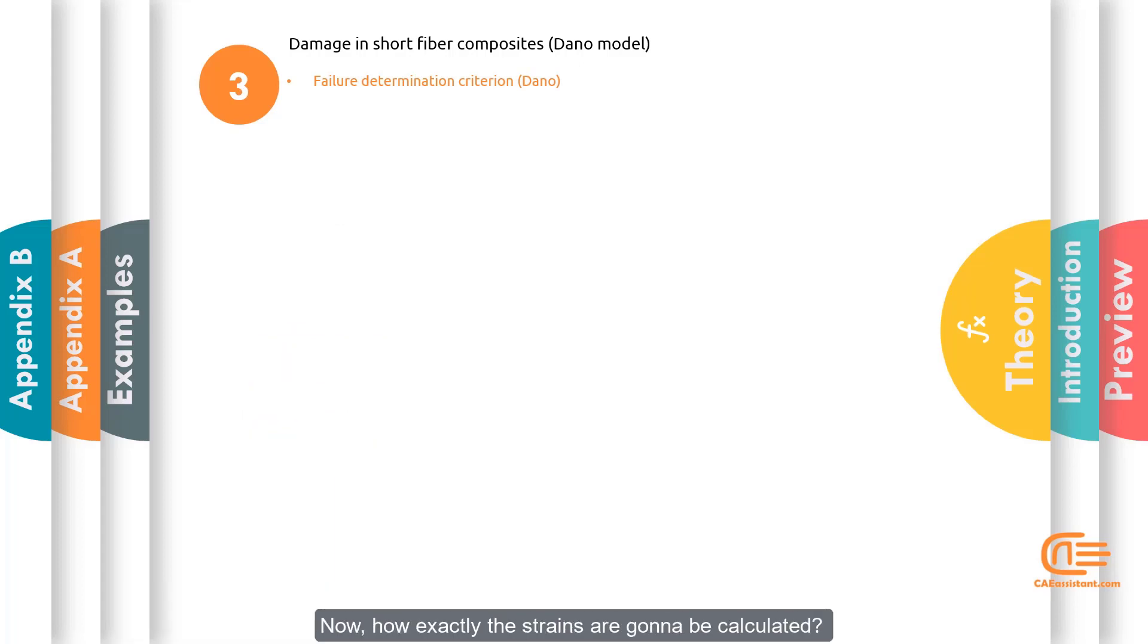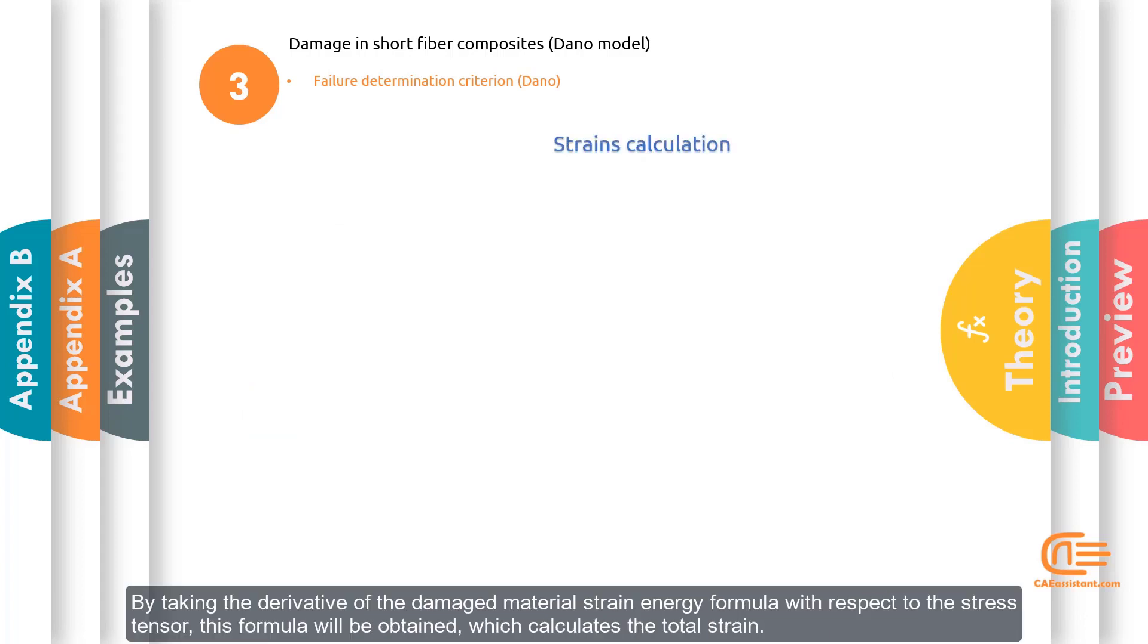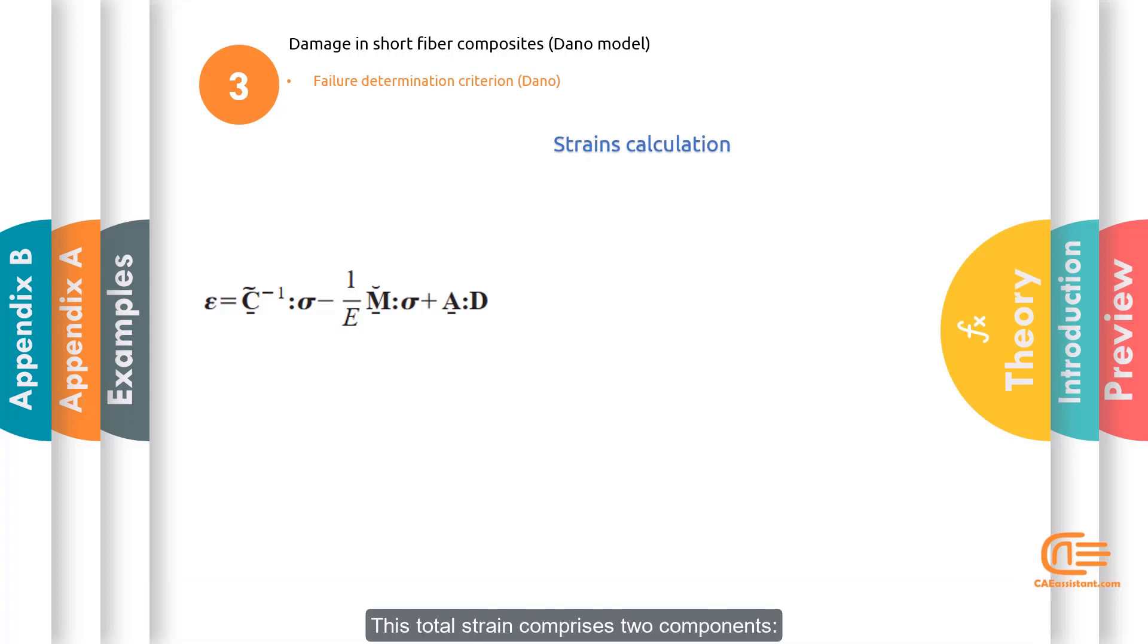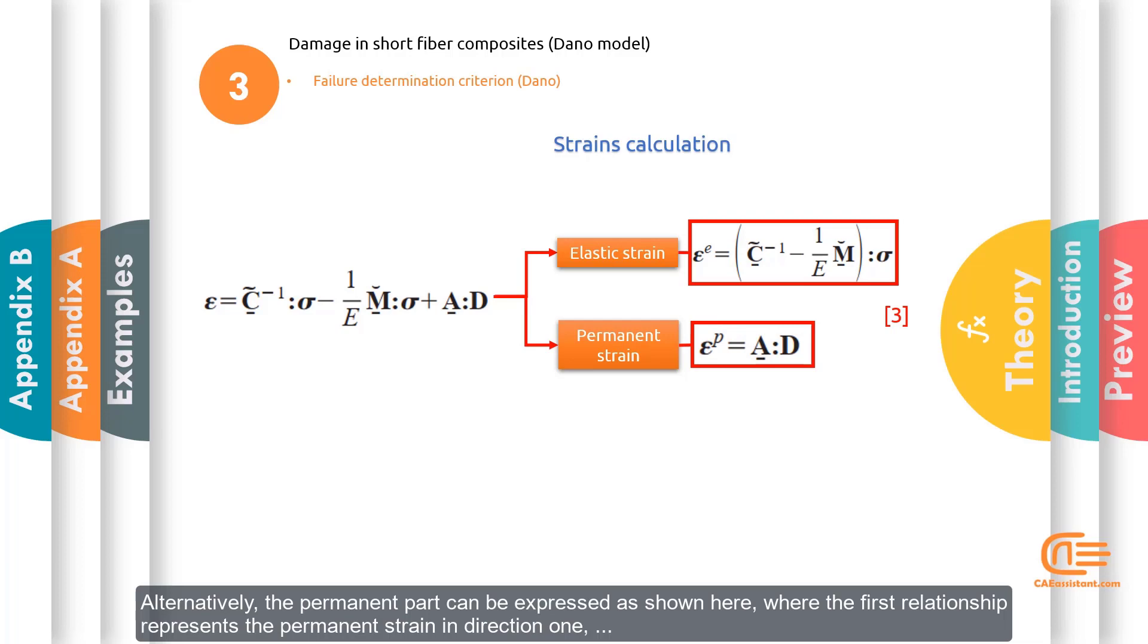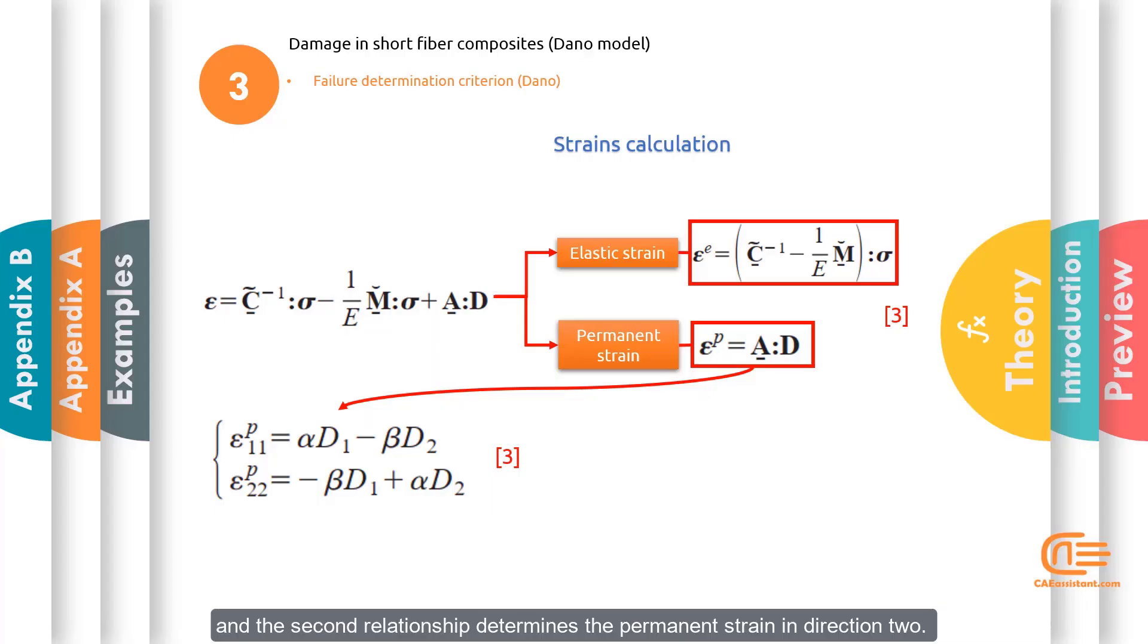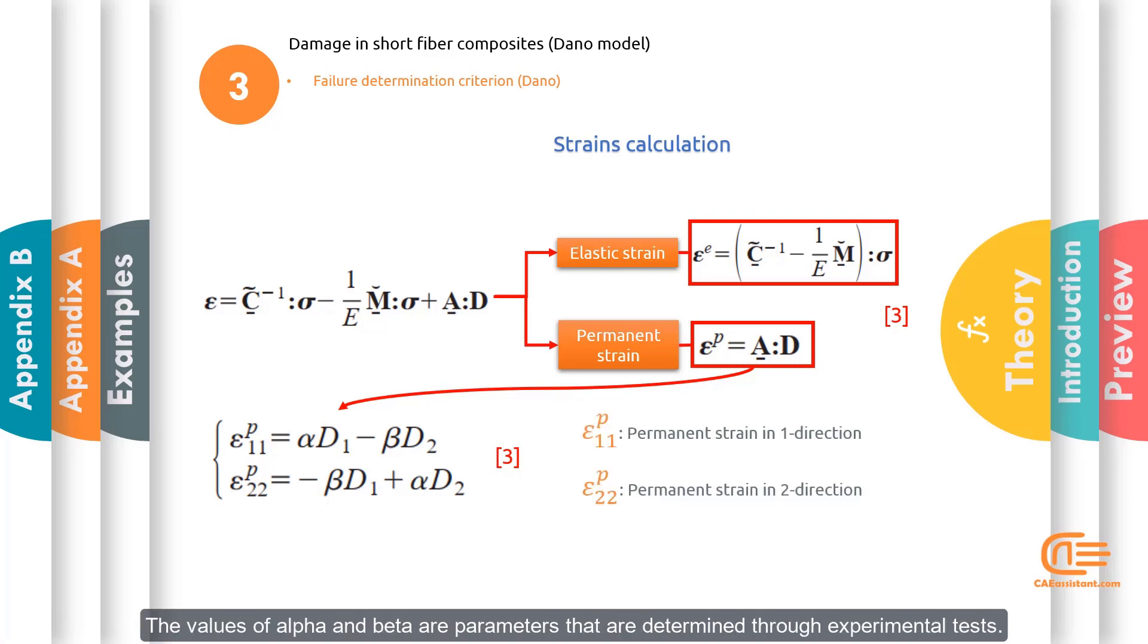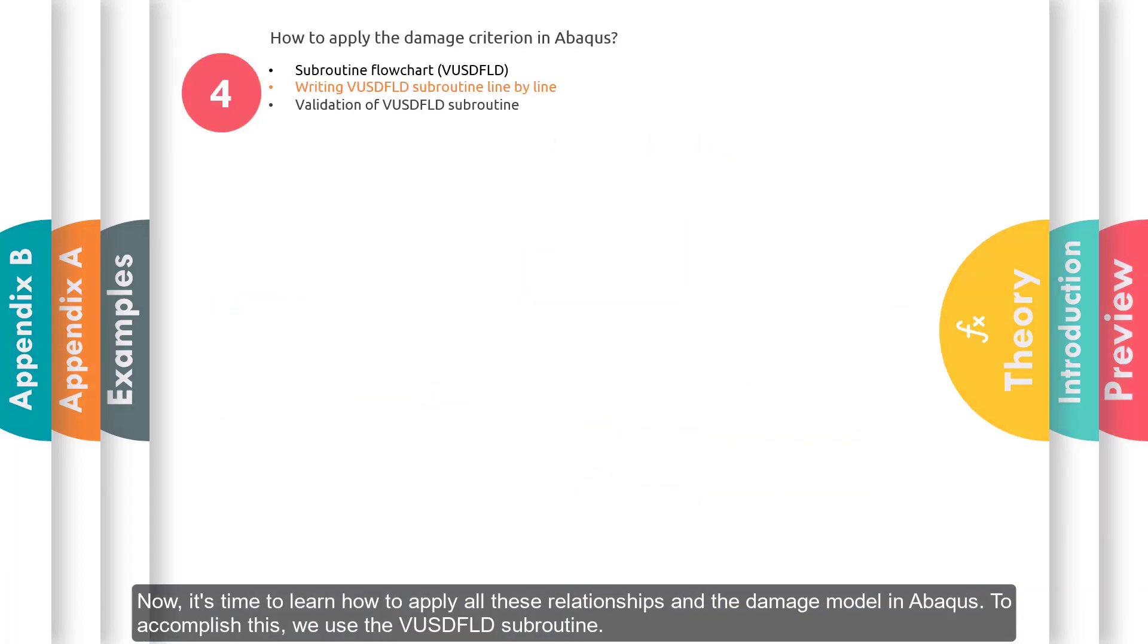Now how exactly the strains are going to be calculated? By taking the derivative of the damage material strain energy formula with respect to the stress tensor, this formula will be obtained, which calculates the total strain. This total strain comprises two components: an elastic part which is determined using a specific relationship and a permanent part which is obtained through another relationship. Alternatively, the permanent part can be expressed as shown here where the first relationship represents the permanent strain in direction 1 and the second relationship determines the permanent strain in direction 2. The values of alpha and beta are parameters that are determined through experimental tests.